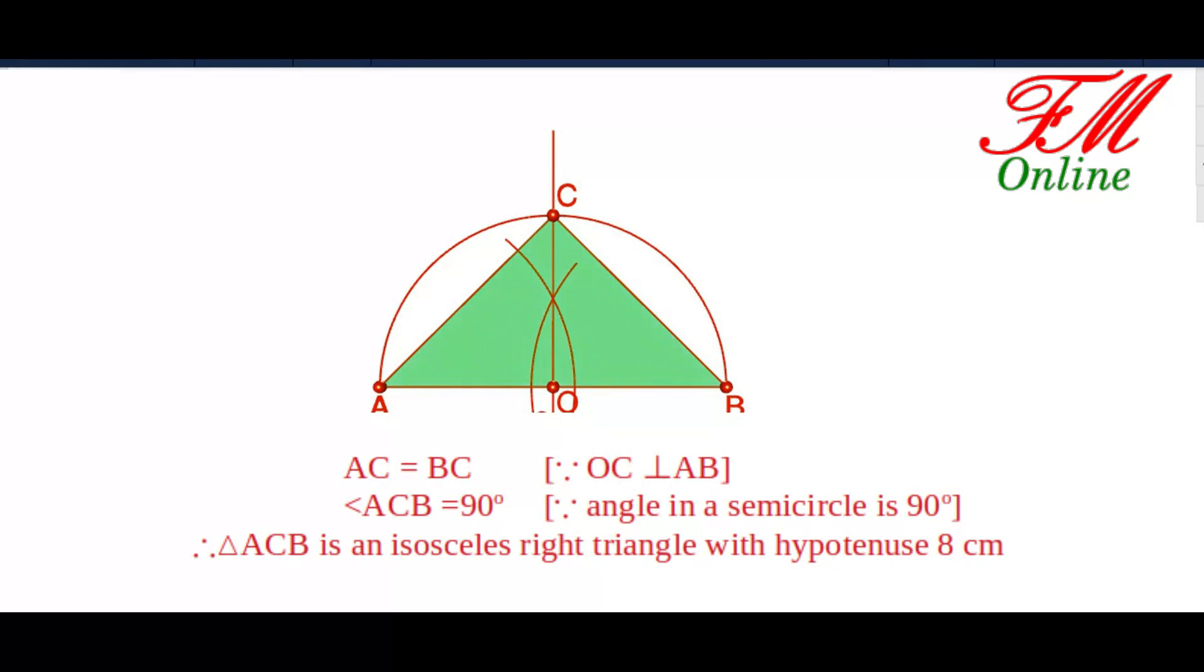So in this figure, we have AC equal to BC because C is on the bisector of AB. Also, angle ACB is 90 degrees because angle in a semicircle is 90 degrees.